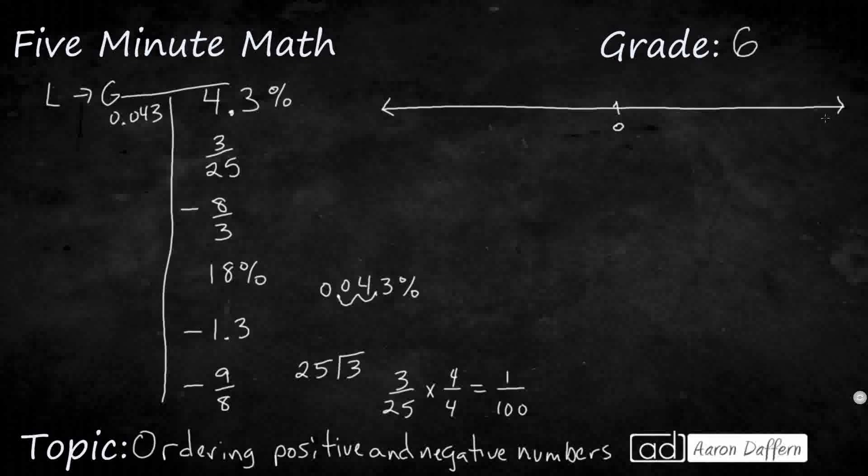And yeah, I could make this into hundredths real easy if I just multiply by 4. So we can make an equivalent fraction. 3/25 is the same as 12/100, and 12 hundredths is the same as 0.12. So we've got that one down.